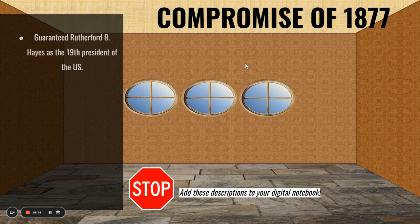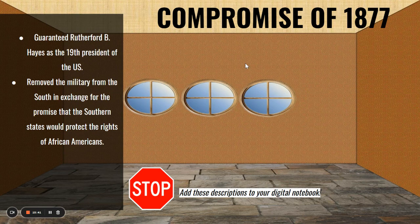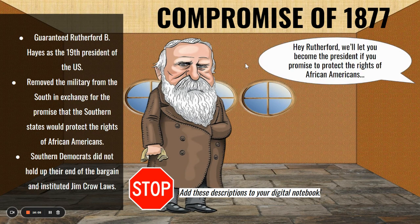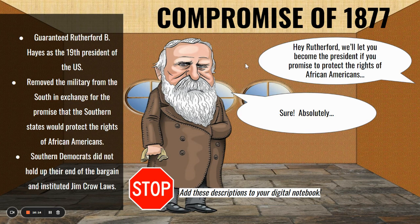Reconstruction officially ended with the Compromise of 1877, which guaranteed that Rutherford B. Hayes would become the 19th president — his presidency was essentially given to him. In exchange for removing the military from the South, the South promised to protect the new rights of freed African-Americans. They did not hold up their end of the bargain and instead instituted Jim Crow laws and segregation. Hayes did not hold the Southern Democrats to their word, Reconstruction ended, and segregation began in the South. Go ahead and add this to your notebook.